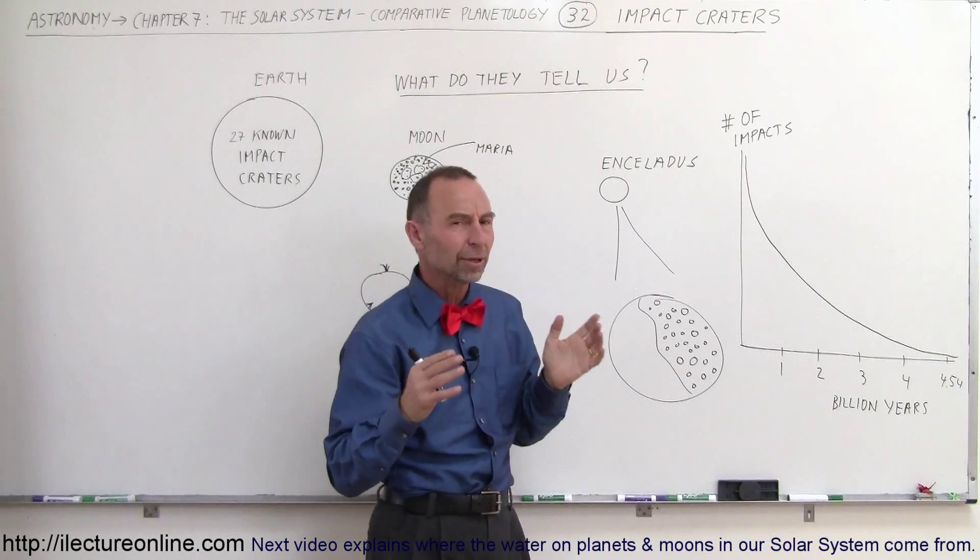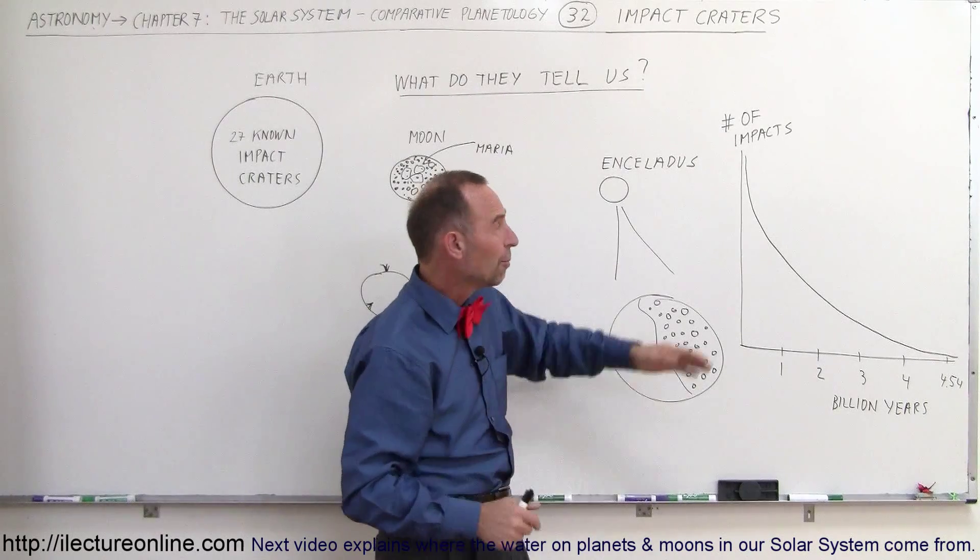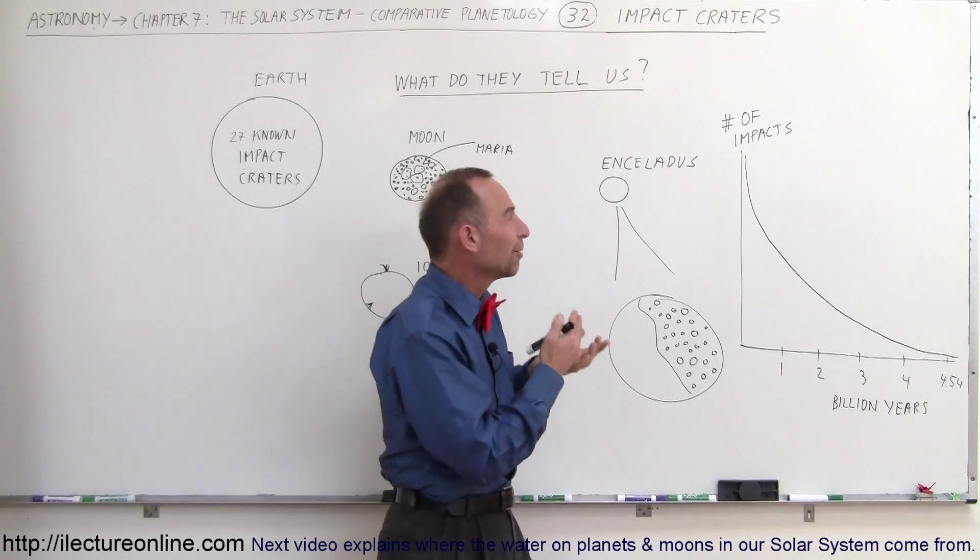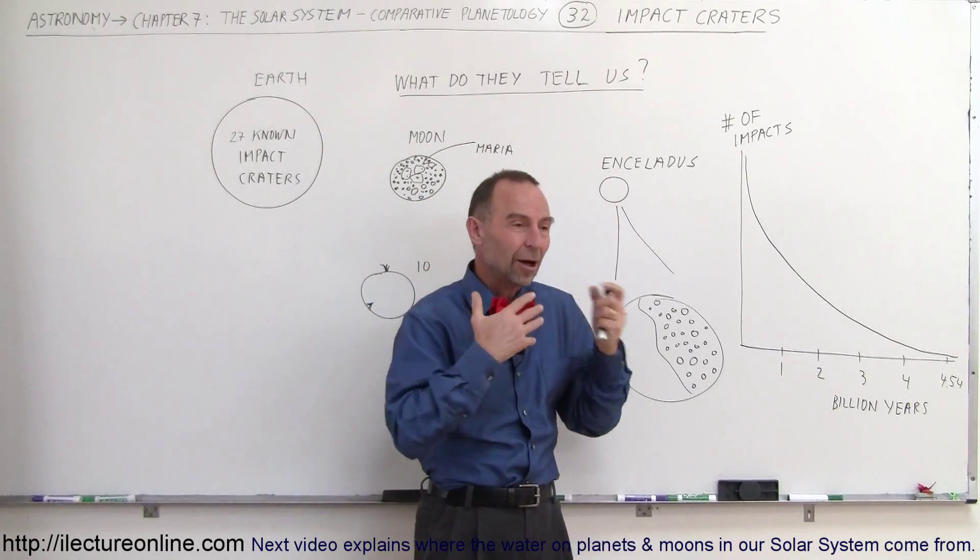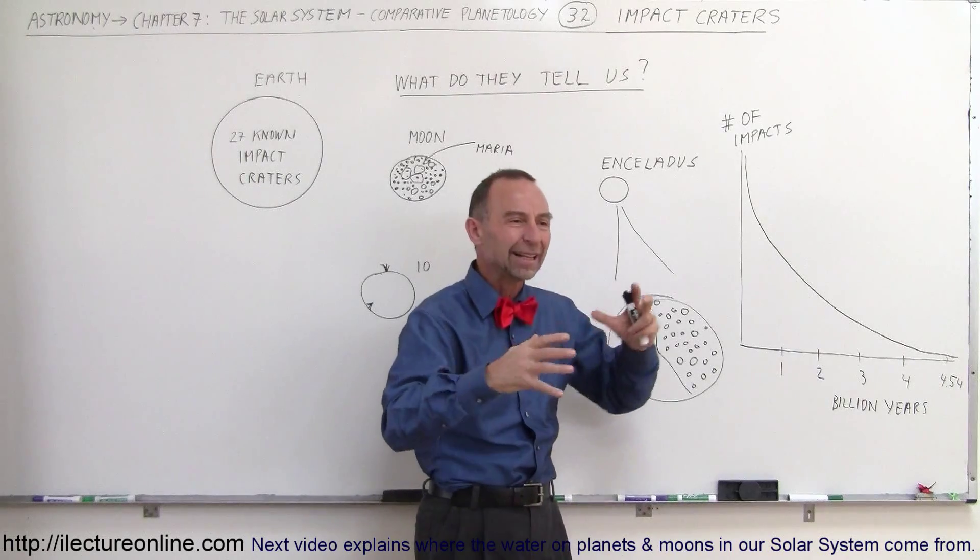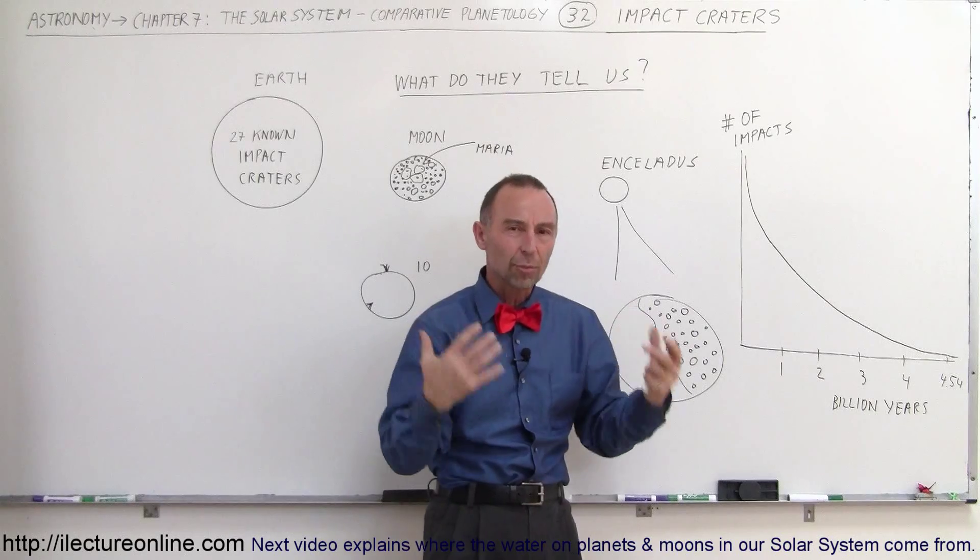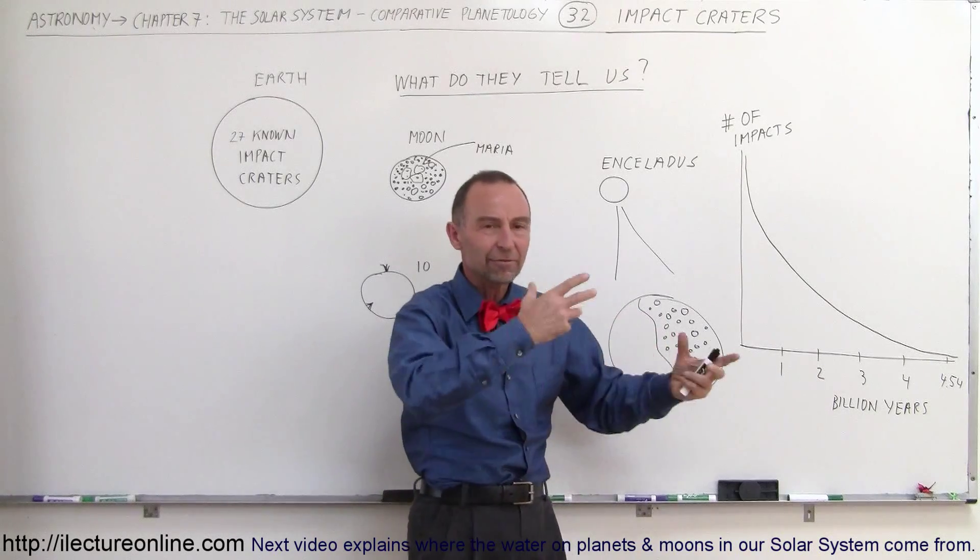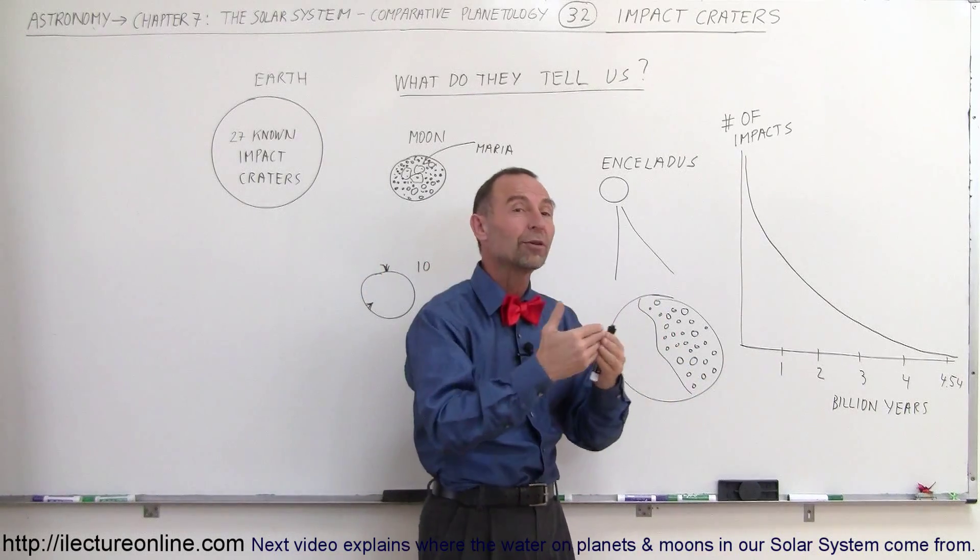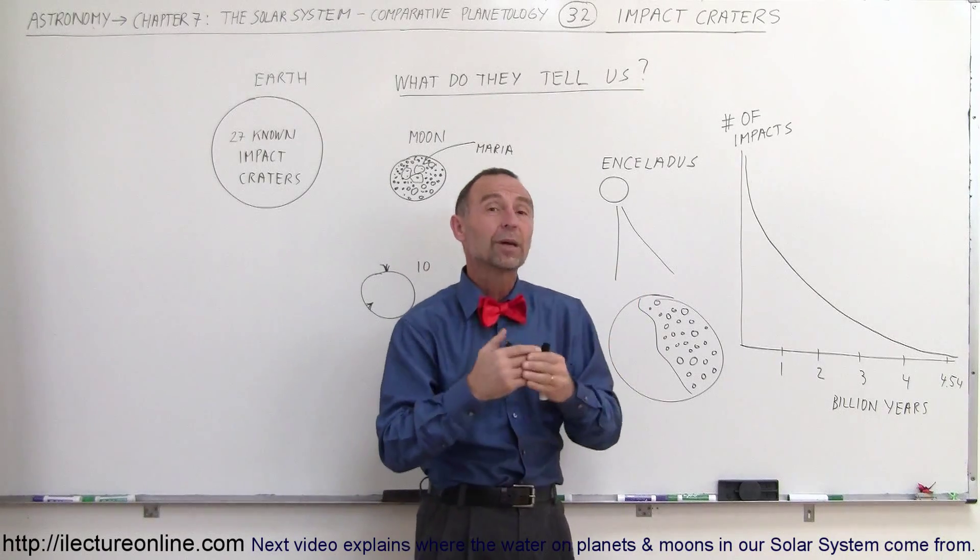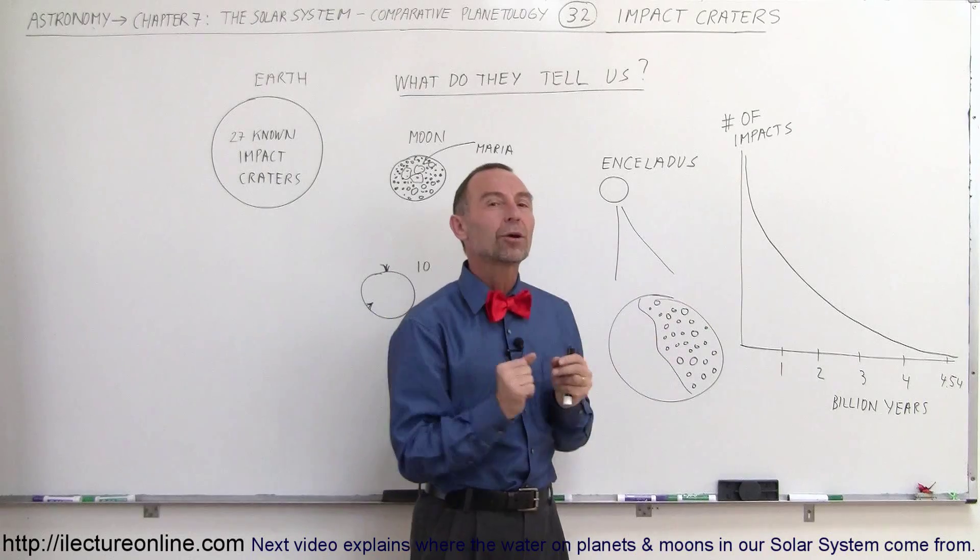The first 100 million years or so must have been a very busy period of impacts, meaning all the moons and all the planets were continuously being bombarded by the leftover debris that was in the solar system. Asteroids, comets, small planetesimals must have been flying around and as they cross the orbit of the planet or the moon, just as the moon or the planet gets there, a cataclysmic impact leaving a big crater.